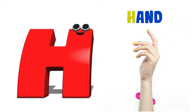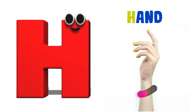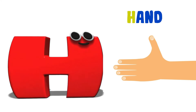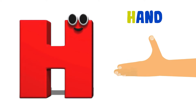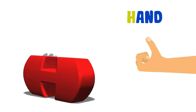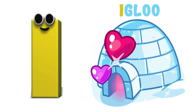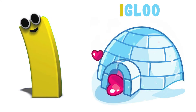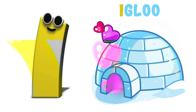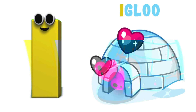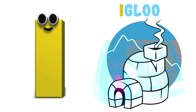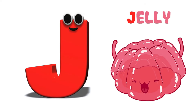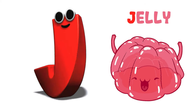H is for Hen. H, hen, H, hen, H, hen. I is for Igloo. I, igloo, I, igloo.